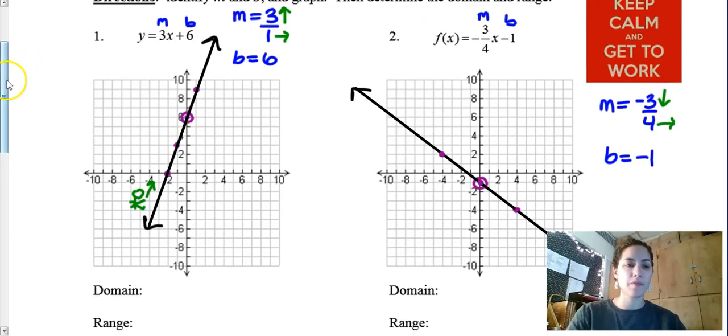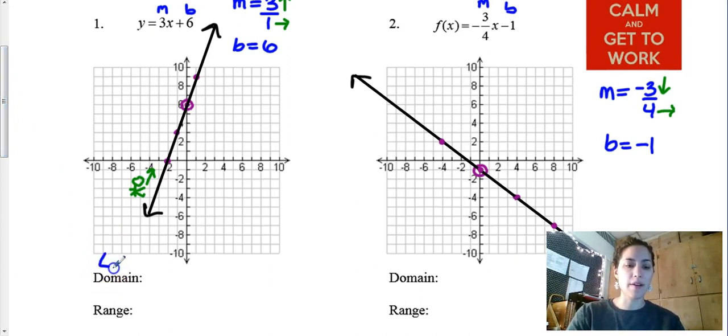Domain as a reminder we come in from the left and the right. So when I come in from the left I hit an arrow that tells me negative infinity. And I come in from the right I hit another arrow positive infinity.